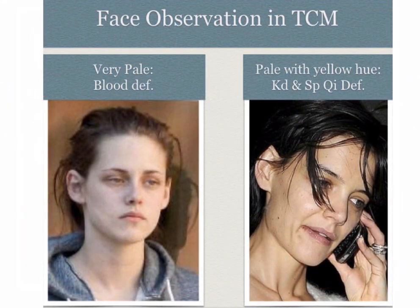Let's practice with what we just saw. Looking at two actresses — the one on the left is very pale, definitely blood deficient. The one on the right is also pale, but it's a very different pale — more with a yellow hue to it. When there is paleness with a yellow hue, that means there's dampness. So this is usually a kidney and spleen deficiency that creates dampness, because when spleen qi is deficient, there's always dampness.